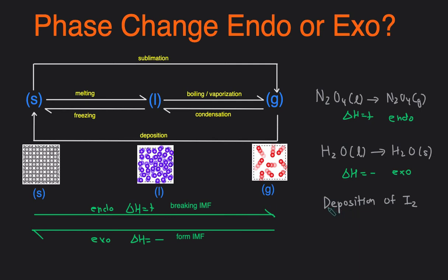And then last one, this time we have deposition of I2. We first need to know what deposition is. Deposition, you can see right here, is when a gas turns into a solid. So gas to solid, that is going to the left, so that will be an exothermic reaction as well, because it's going to the left.